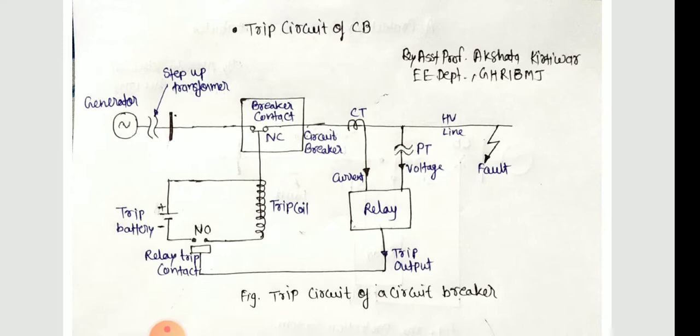The circuit breaker is operated by the output of the associated relay. When the circuit breaker is in the closed condition, its contacts are held closed by the tension of the closing spring.